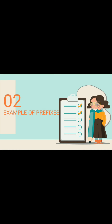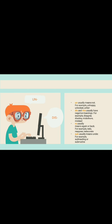The second: example of prefixes. 'Un' usually means 'not'. For example: unhappy, unlooked, unfair. 'Dis' and 'mis' usually have negative meanings. For example: disagree, disobey, misbehave, mislead.